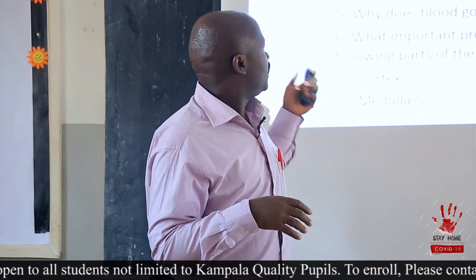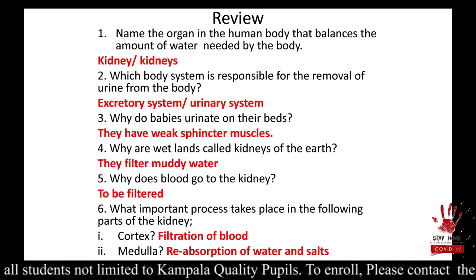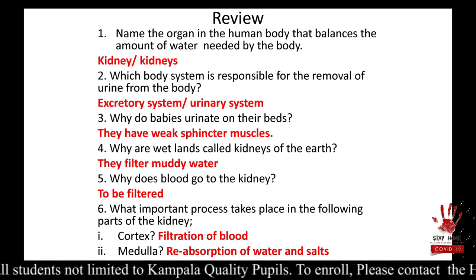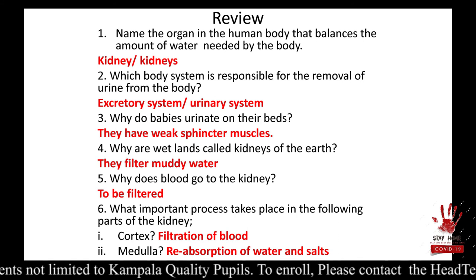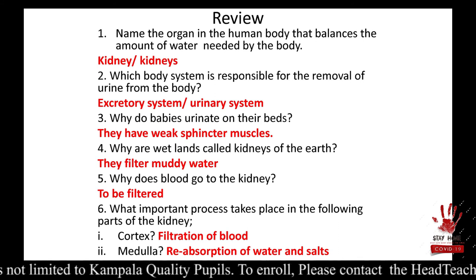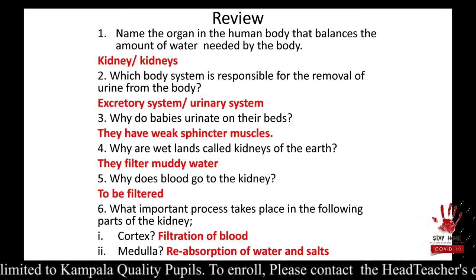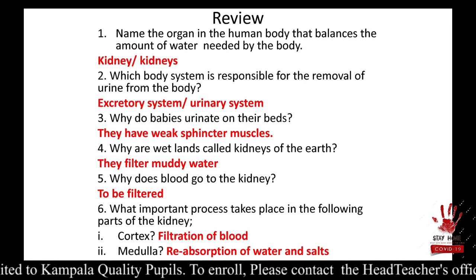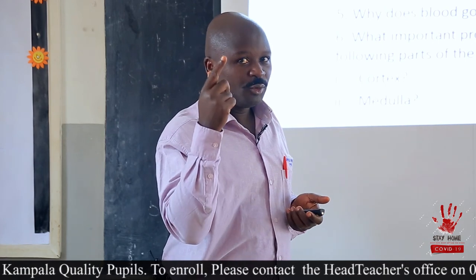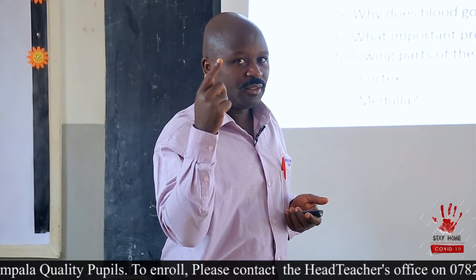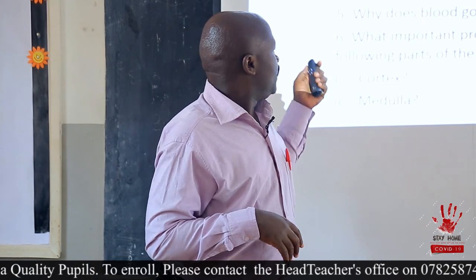Next question: why does blood go to the kidney? Blood goes to the kidney to be filtered — or you can say, for filtration. And the part where filtration takes place in the kidney is the cortex.